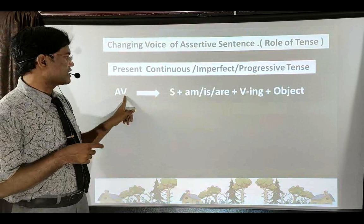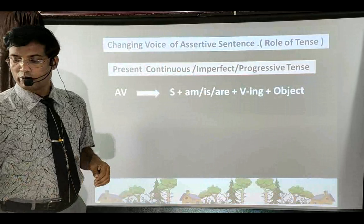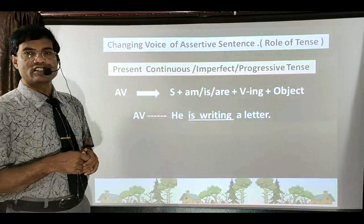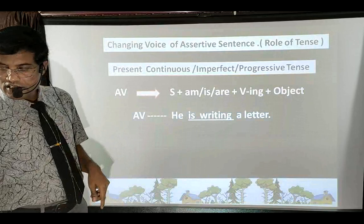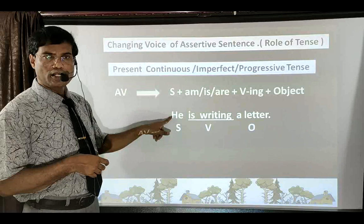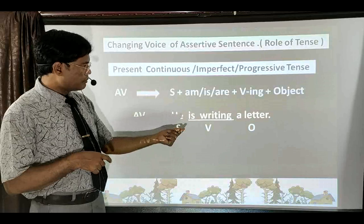In Present Continuous Tense, active voice looks like: Subject + is/am/are + verb-ing (present participle) + Object. Sentences look like: 'He is writing a letter', 'He is drinking water', 'She is eating an apple', and thousands of such sentences. The first step: identify subject, verb, and object. Here 'he' is the subject (pronoun), 'is writing' is the verbal group, and 'a letter' is the object.